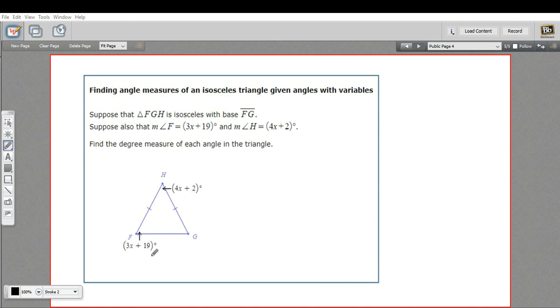What we need to know to solve this problem is that in an isosceles triangle, the angles opposite the legs are the same. So this angle is the same as this angle. So if this one here is 3x plus 19, then this one is 3x plus 19.